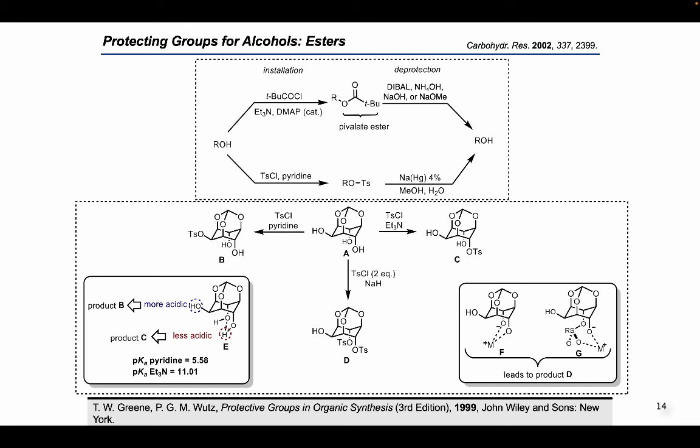Para-toluenesulfonate esters are often used for the regioselective protection of hydroxy groups in carbohydrates and nucleic acids. Methods for the selective deprotection of tosyl groups include reductive cleavage with sodium amalgam in methanol. With the tosyl protecting group, some interesting selectivity has been obtained. The different regioselectivity observed for the sulfonylation of triol A in the presence of pyridine versus triethylamine is due to their difference in basicity. Triethylamine, being a stronger base, can deprotonate one of the axial hydroxy groups, whose acidity is lower than that of the equatorial hydroxy group due to a strong intramolecular hydrogen bond. Since the equatorial hydroxy group is more acidic, sulfonylation takes place at this position in pyridine. Moreover, preferential ditosylation of the axial hydroxy group in the presence of metal hydride is due to stabilization from chelate formation with the metal ion, as shown in structures F and G.